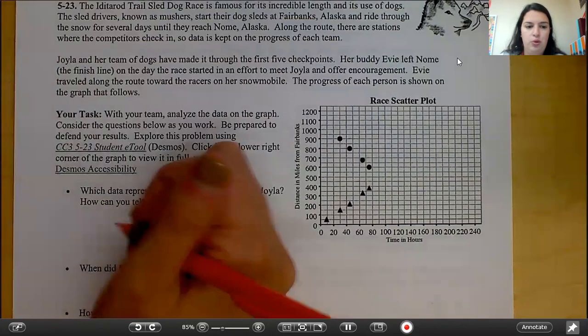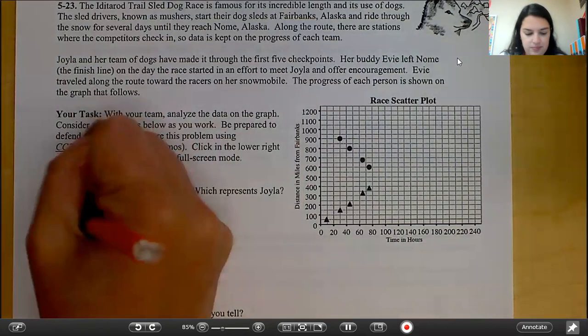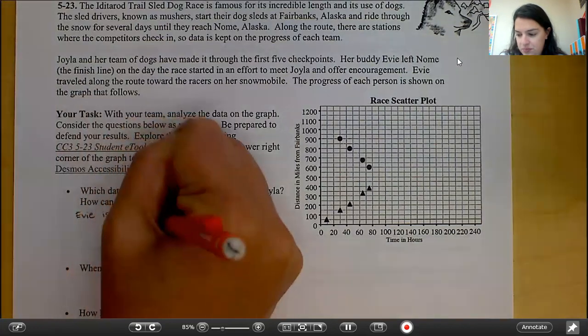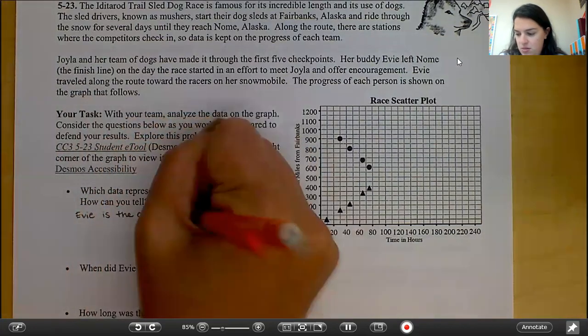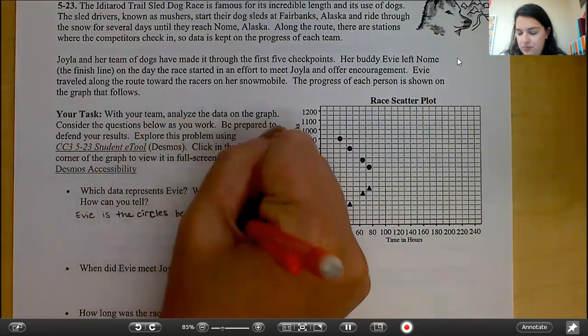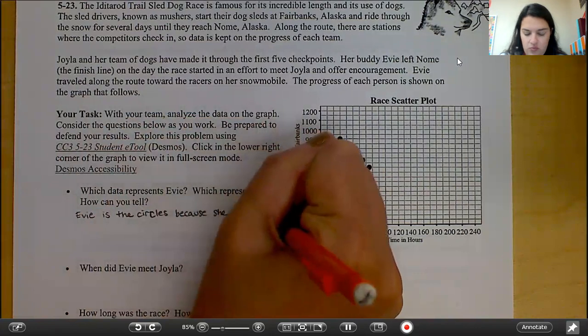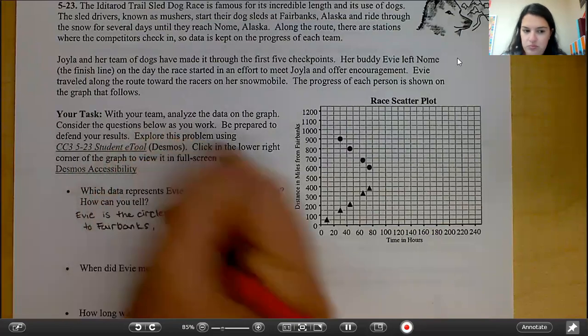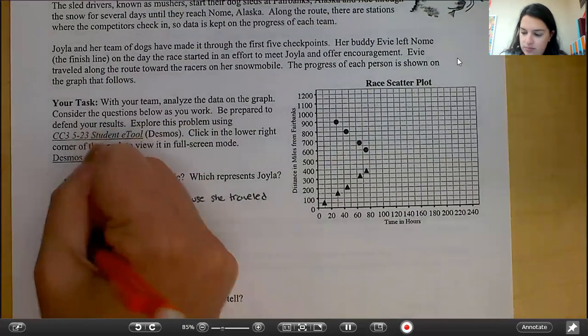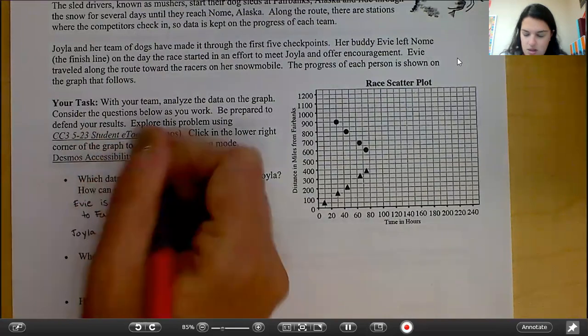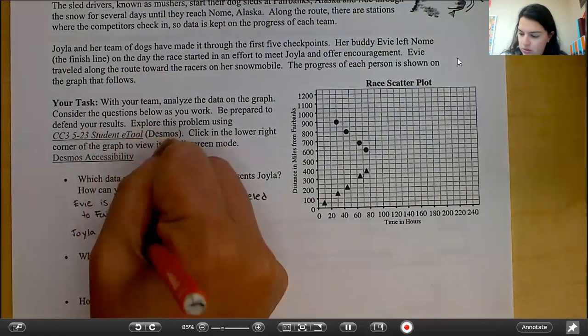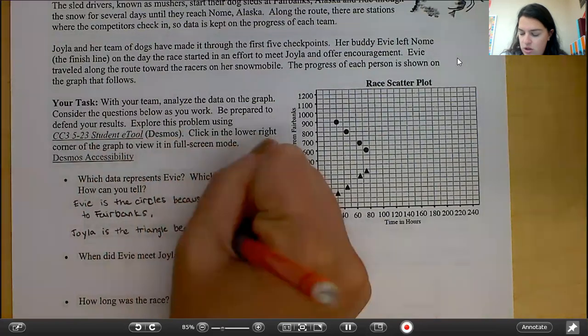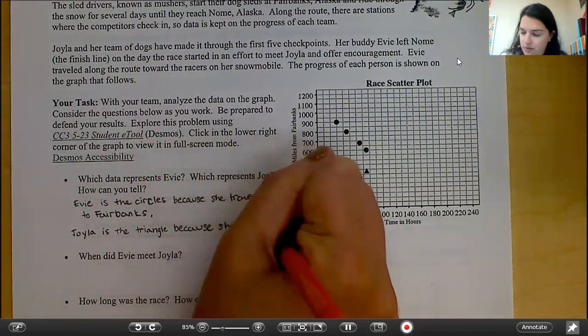If you're back with me, you've answered this first bullet point. So Evie is the circles because she traveled to Fairbanks. Joyla is the triangles because she traveled away from Fairbanks.